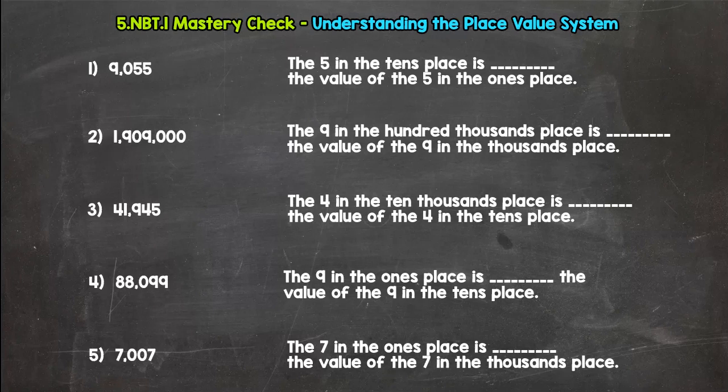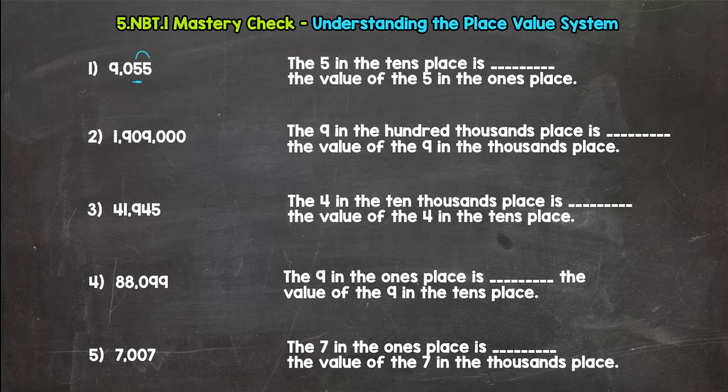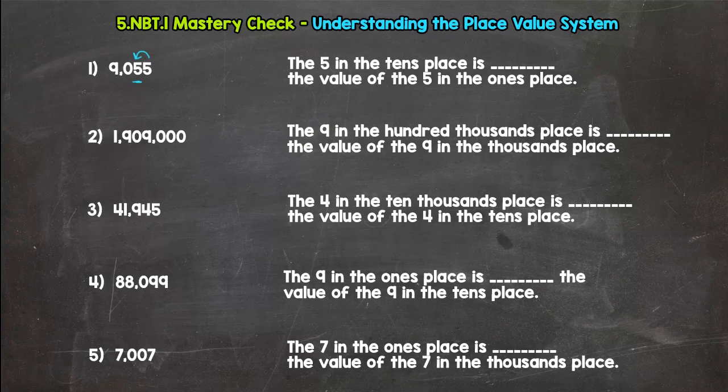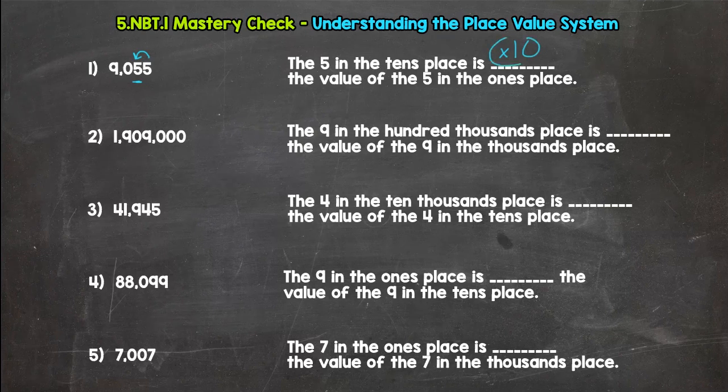So number one: the five in the tens place is blank the value of the five in the ones place. So we are making a jump to the left. How much does the value of the five change? One jump to the left, our value increases by ten times.